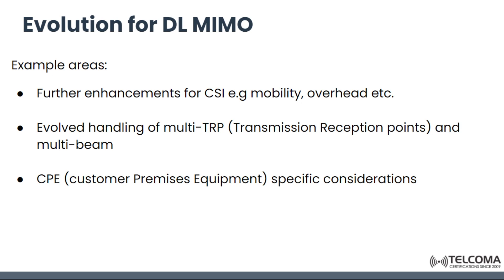MIMO is present in both 4G and 5G. The example areas where we require evolution in this technology include enhancements for channel state information such as improvements in mobility overhead, evolution in handling multi-transmission reception points and multi-beam, and CPE (customer premises equipment) specific considerations.